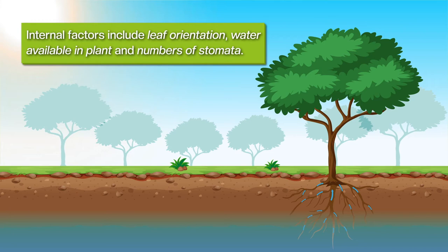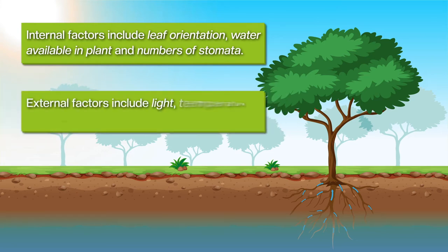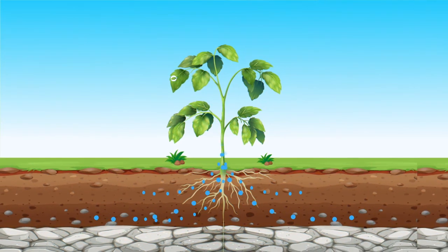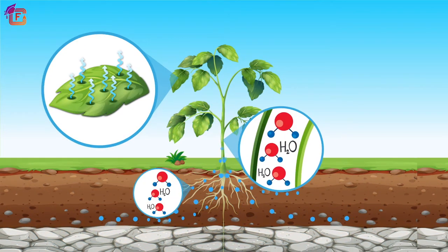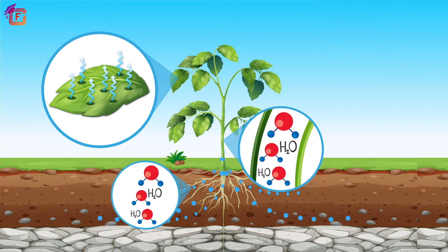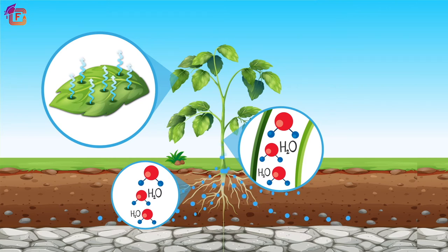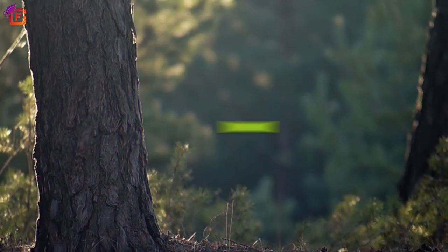The rate at which transpiration occurs is affected by various internal and external factors. Internal factors include leaf orientation, water available in the plant, and number of stomata. External factors include light, temperature, humidity, and wind speed. Transpiration plays many important roles in plants, helping to conduct water and minerals to different parts of the plant.